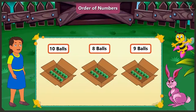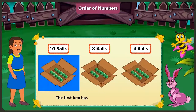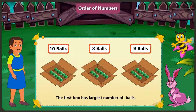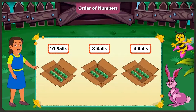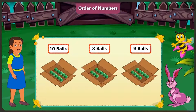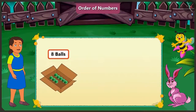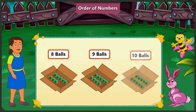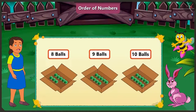And the largest number here is ten, and hence the first box has the largest number of balls. Well done honey. Now tell me, how do we say ten, eight, nine in the order of counting? Yes, while counting, we first say eight and then we say nine and ten. Absolutely right honey. It is said in the order of eight, nine, ten.